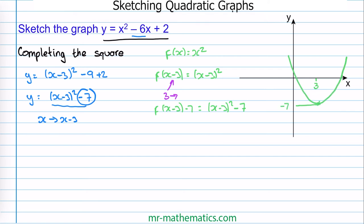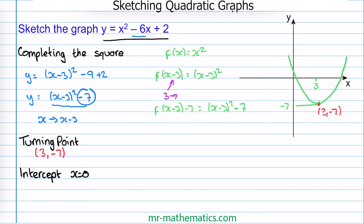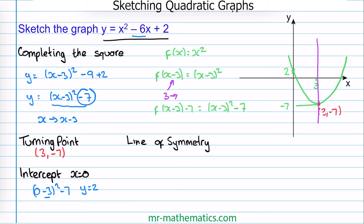So now we can work out our turning point, which is where x equals 3 and y equals minus 7. Next we'll work out the y-intercept when x equals 0. We substitute into 0 minus 3 squared take away 7: negative 3 squared is 9, so y equals 9 minus 7 which is 2. We can mark this here. And finally our line of symmetry — this runs parallel to the y-axis and passes through the turning point, so it has an equation of x is equal to 3.